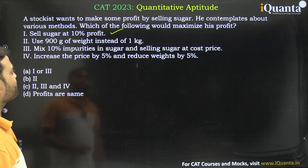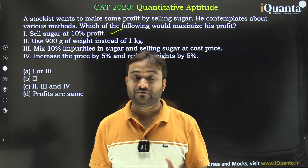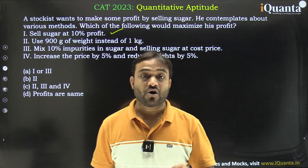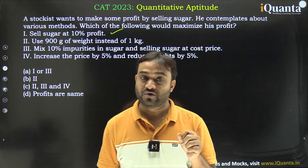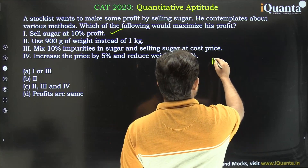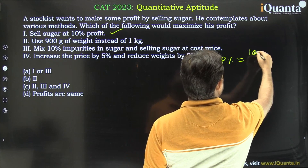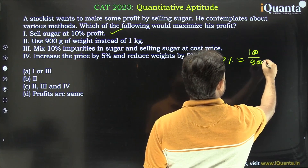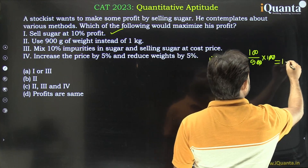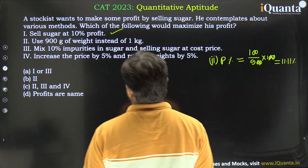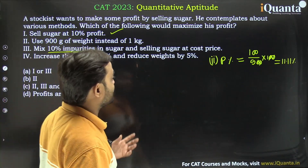The second case: use 900 grams of weight instead of 1 kg. So he is giving only 900 grams for 1 kg. His cost price is 900 grams and his profit is 100 grams out of 1 kg. So profit percentage is 100 divided by 9, which is 11.11 percent.